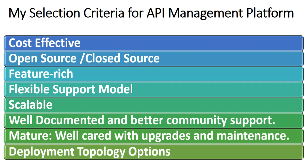The last point in the list is deployment topology options. When we talk about API management platforms, we have three options: a completely cloud-based platform, a completely on-premise platform, or a hybrid platform. Ideally, you will look for an API management platform that provides all these options so you are flexible. For certain regulatory or security requirements you might prefer to have everything on-premises, or you may look into a hybrid situation — for example, having your developer portal and gateway on the cloud but keeping your publisher or management consoles on-premise.